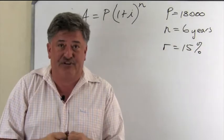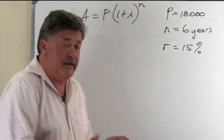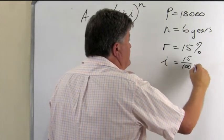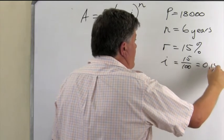And the interest was given to us. And the r is 15%. Remember, you can't substitute that. You must use i. So i, therefore, will be 15 over 100, which is equal to 0.15.